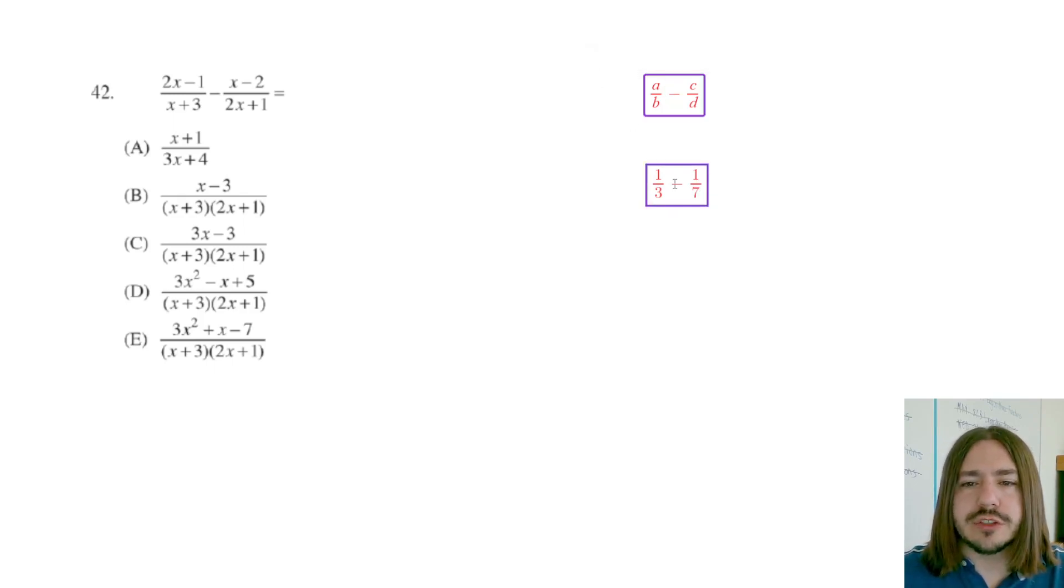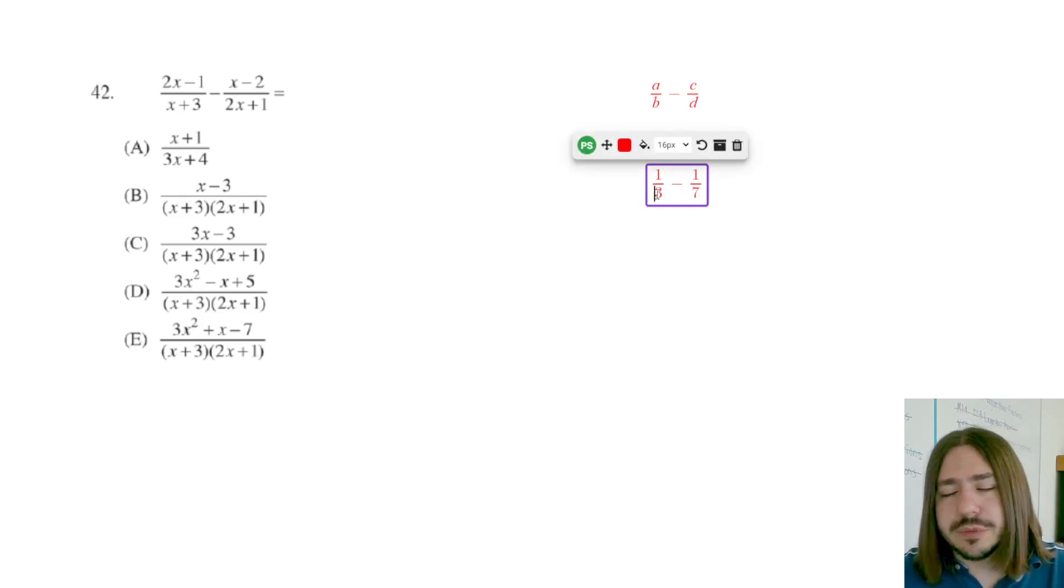So typically when you subtract fractions, you got to find a common denominator. Now in school, you're probably taught to try to find the least common multiple of the denominators. But in actuality, you don't need to find the least common multiple to subtract these. You just need to find a common multiple. So instead of trying to figure out what the least common multiple is, to find a common multiple, all you need to do is just multiply the two denominators together. So three times seven is going to be 21.